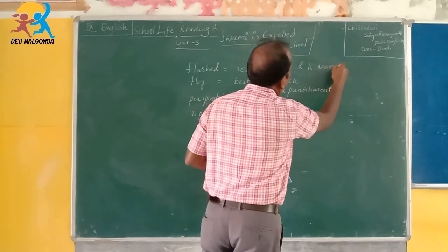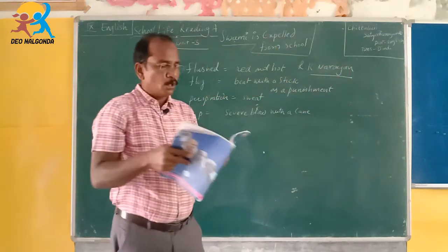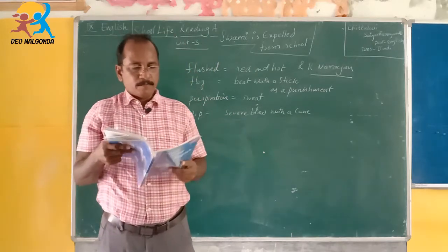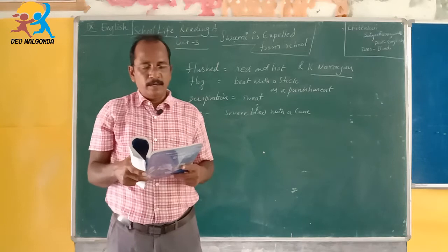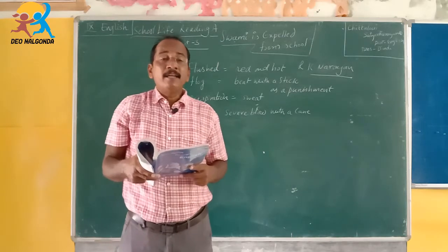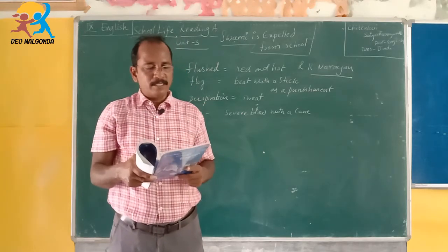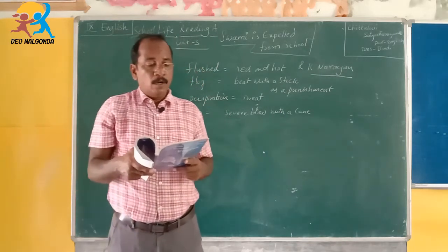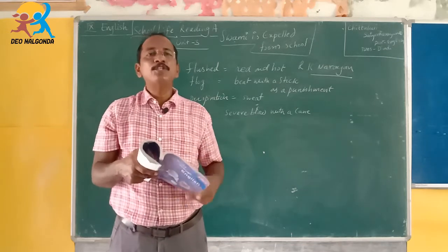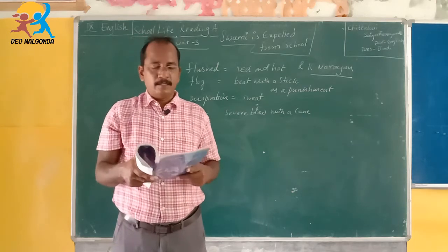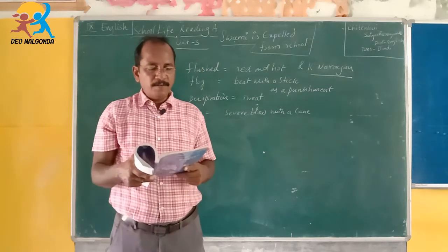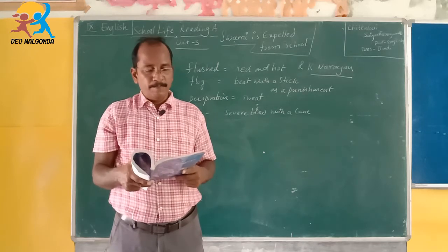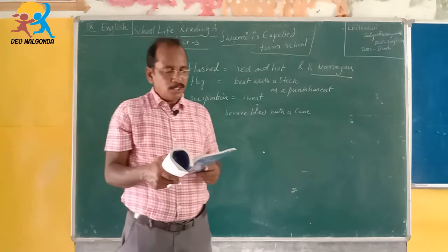R.K. Narayan lived from 10th October 1906 to 13th May 2001. His full name is Rasipuram Krishnaswami Iyer Narayanswami. He was an Indian author, and his works of fiction include a series of books about people and their interactions in an imagined town in India called Malgudi. Malgudi is a fictional village — it does not actually exist; it was the creation of R.K. Narayan.